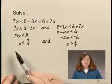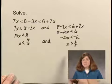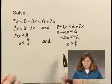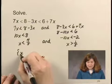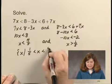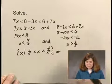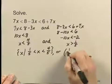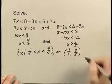Now x must be both less than 4 fifths and greater than 1 fifth, which means x must be between 1 fifth and 4 fifths. We can write that as the set of all x such that 1 fifth is less than x is less than 4 fifths. Or in interval notation, we can write it as the interval from 1 fifth to 4 fifths.